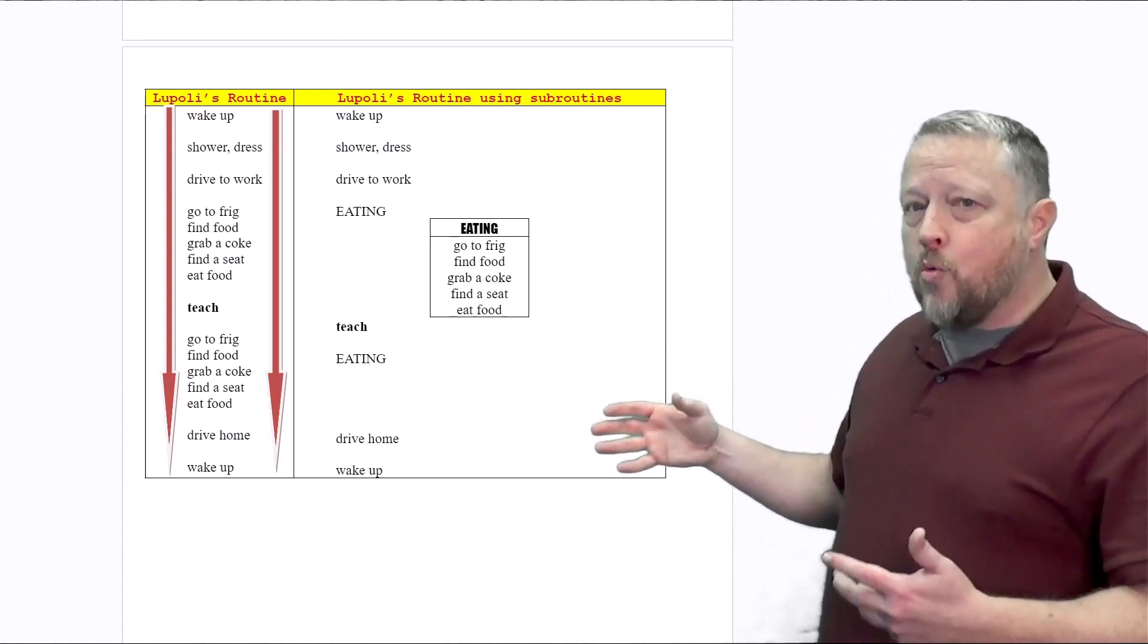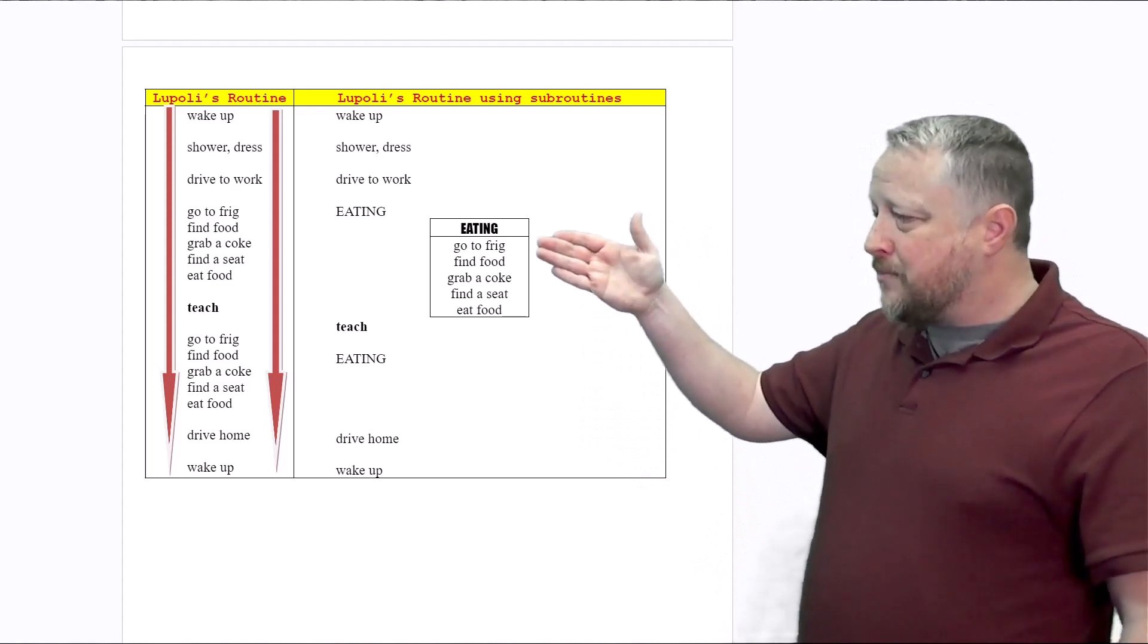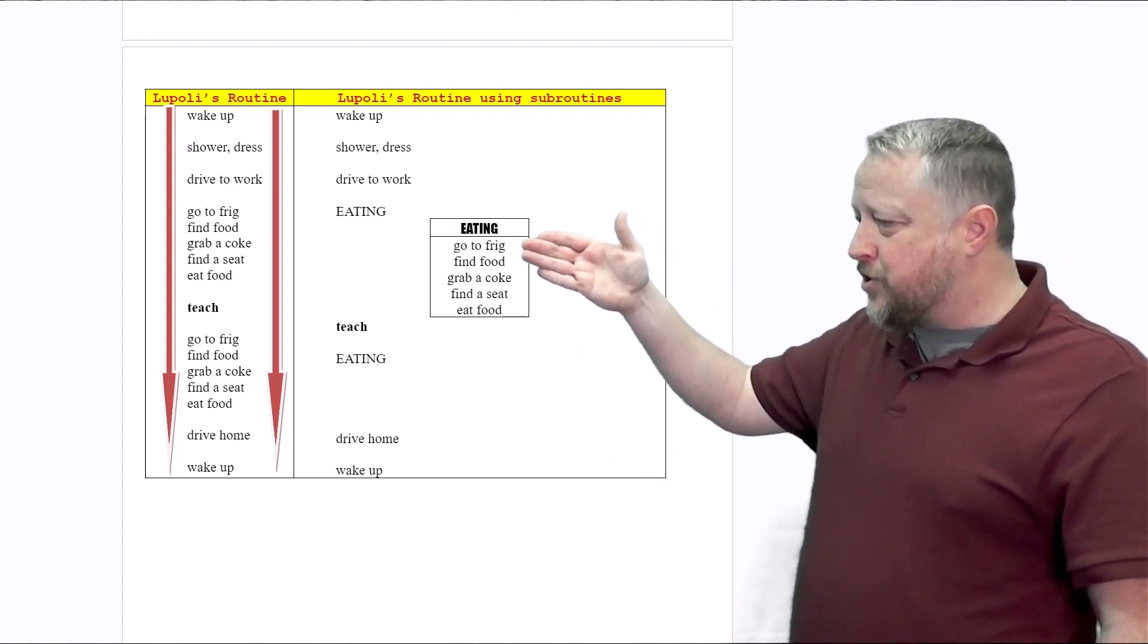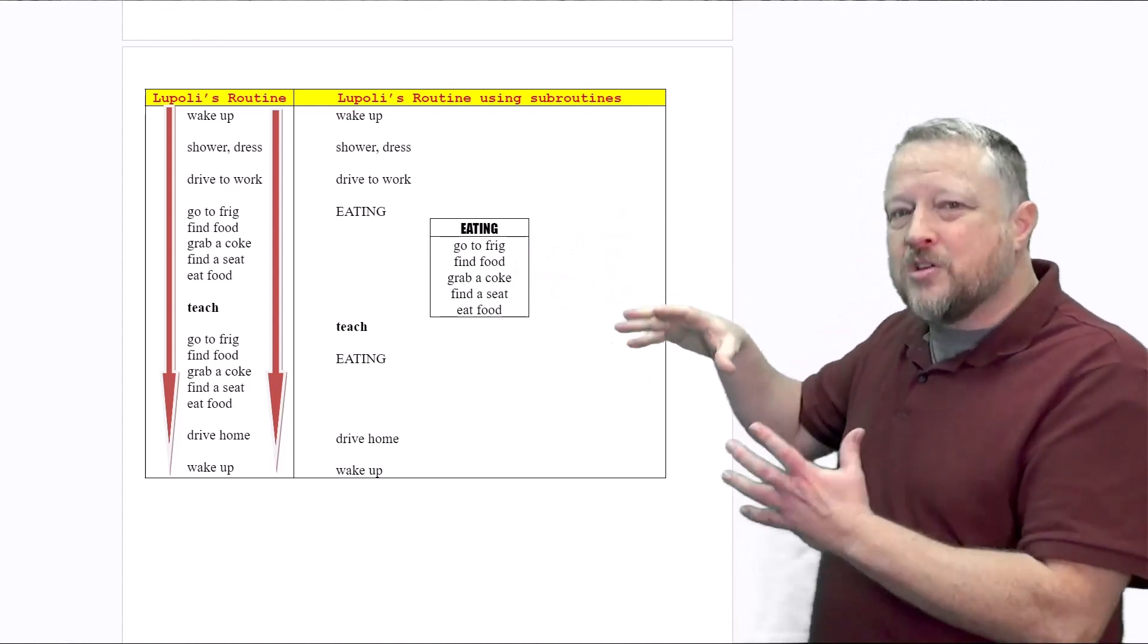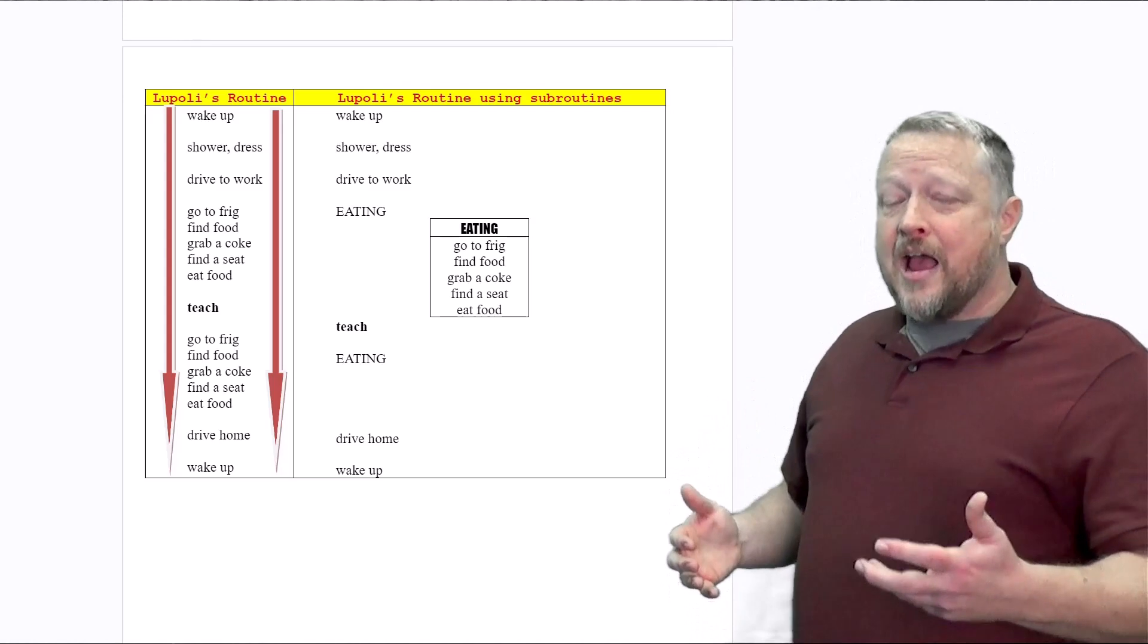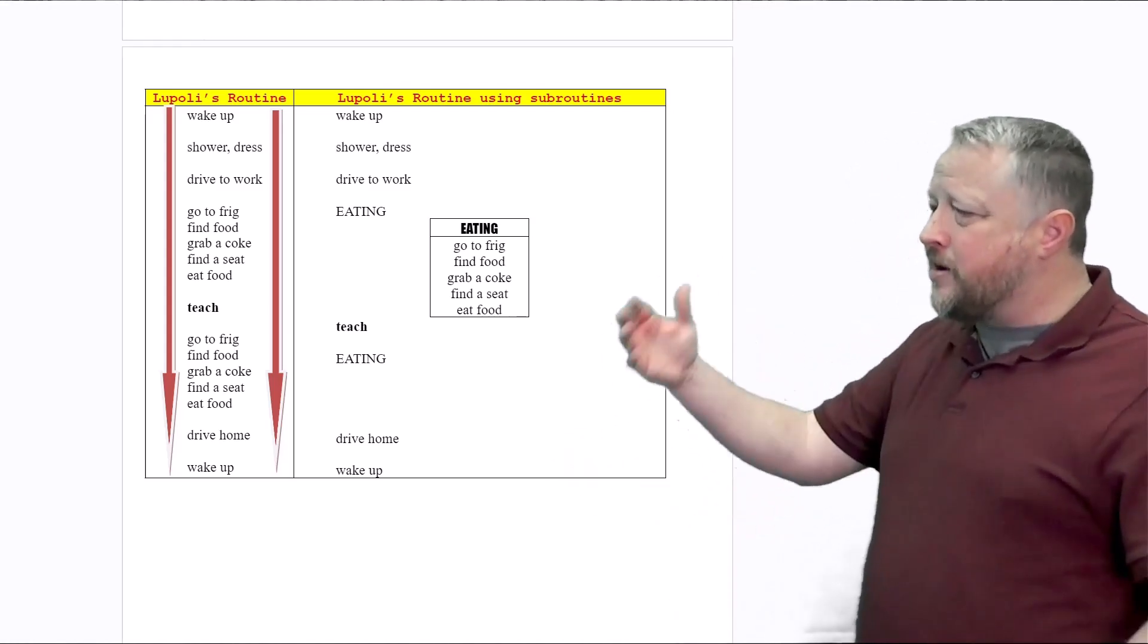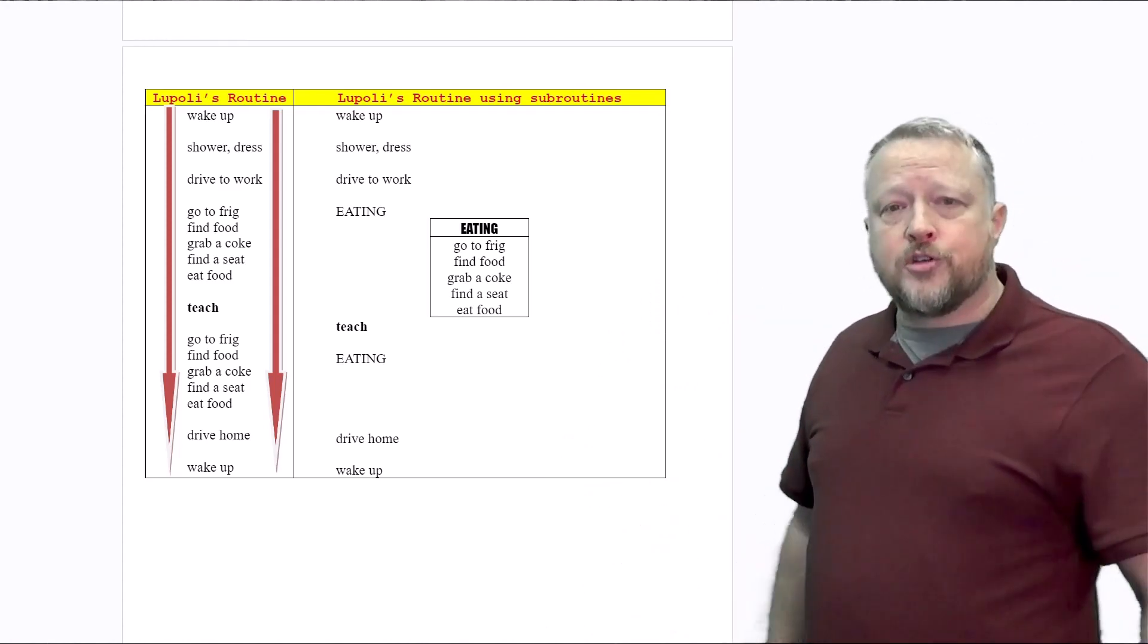If we know where a problem is and it's compartmentalized here, we can go to the function, maybe change it from fridge to freezer instead. This helps us compartmentalize, helps with organization, and debugging as well. So there are a lot of reasons why we really want to do this and start putting together functions and methods.